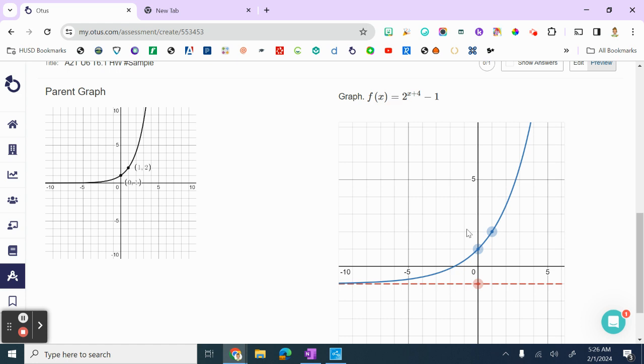So this, remember, was to the left 4. So I'm just going to take this point and count to the left 4: 1, 2, 3, 4. And then remember this part said it had to go down 1. So I'm going to go down 1.